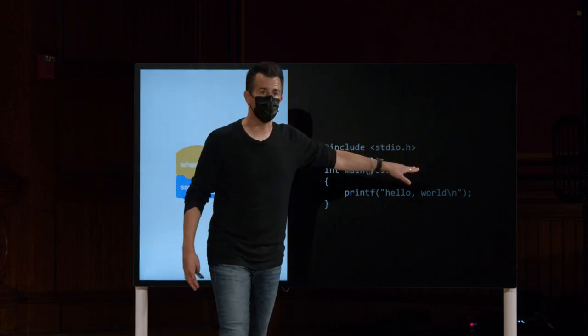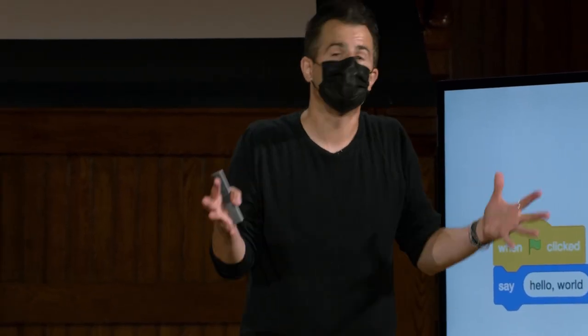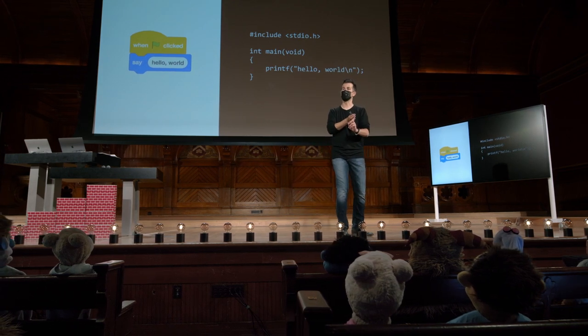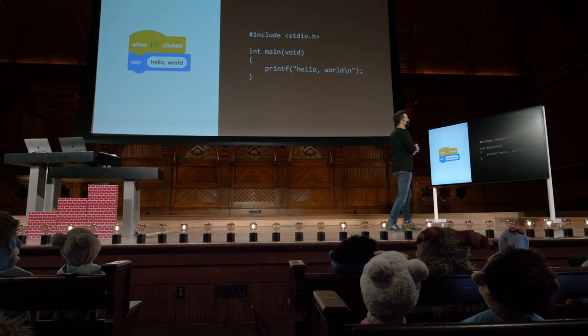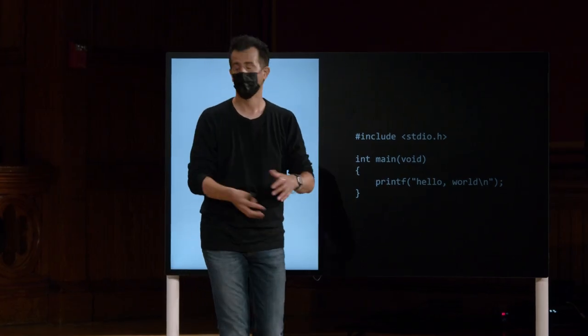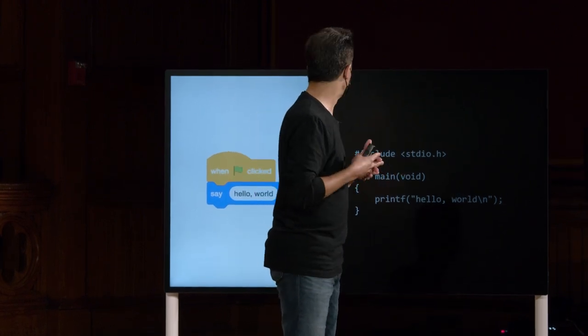O nome do arquivo específico que estou mencionando aqui — stdio.h, cs50.h — é o que os programadores em C chamaram de arquivo de cabeçalho. Veremos eventualmente o que está dentro desses arquivos. Para encurtar a história, é como um menu de todas as funções disponíveis. No cs50.h, há um menu mencionando getString, getInt e outras coisas. E no stdio.h, há um menu de funções, entre as quais está printf. Esse menu é o que prepara o compilador para saber como implementar essas funções.